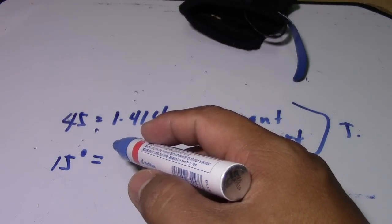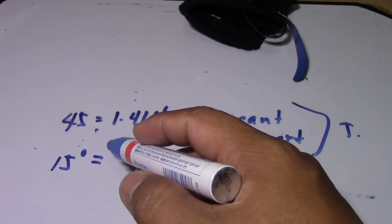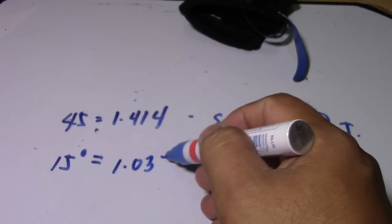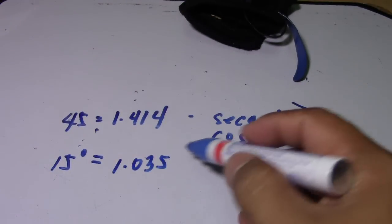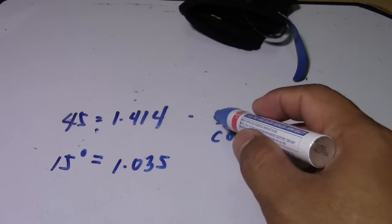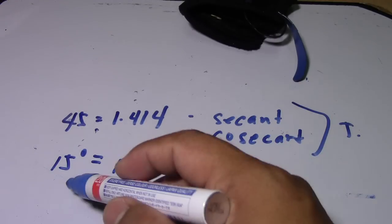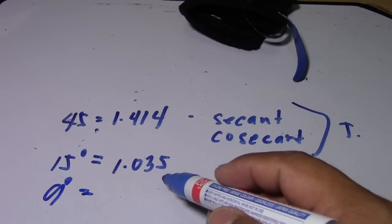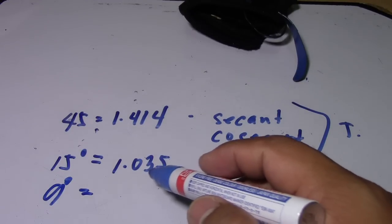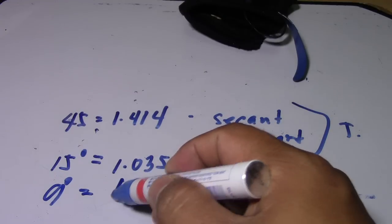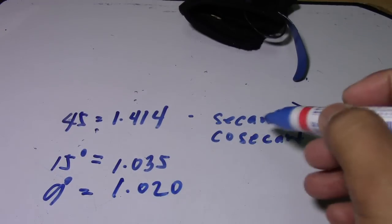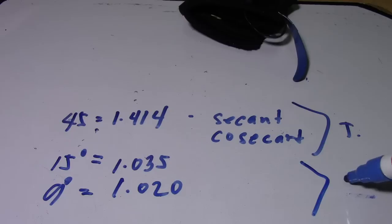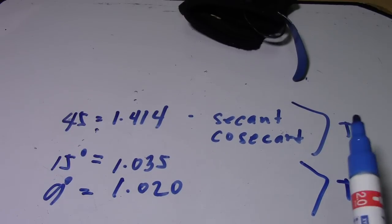For 15 degrees you use 1.035 — this is the secant for 15 degrees to find the travel. For 9 degrees, you use 1.020 — this is also the secant, and the same method to find the travel.